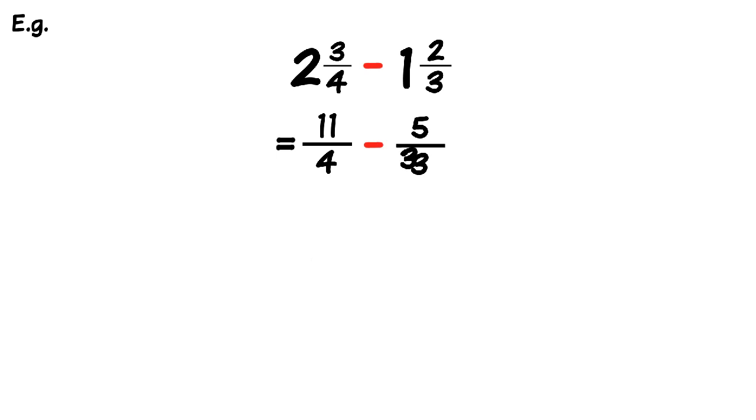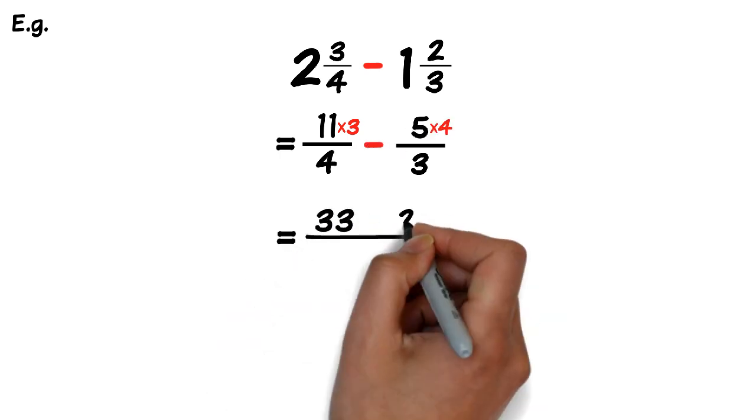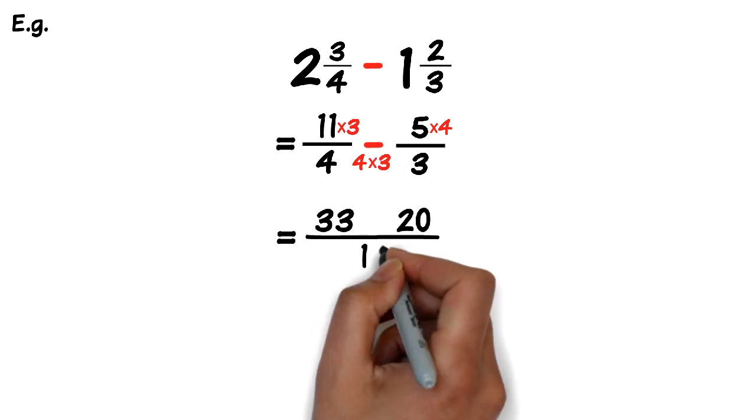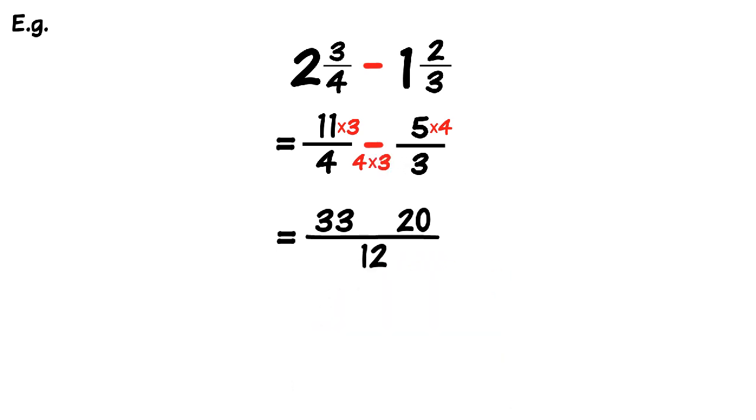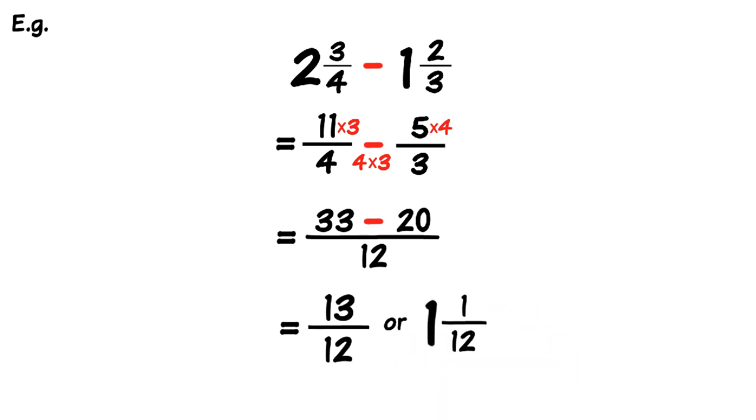Since the denominator is different we must cross multiply. So 11 times 3 equals 33. And 5 times 4 is 20. And the new denominator becomes 4 times 3 which is 12. So we have 33 minus 20 all over 12. So 33 minus 20 is 13. So the new fraction becomes 13 over 12. Or 1 and 1 twelfth.